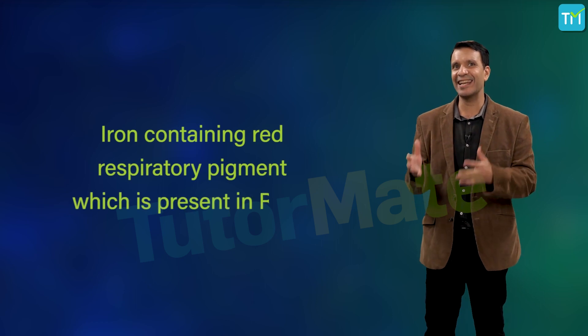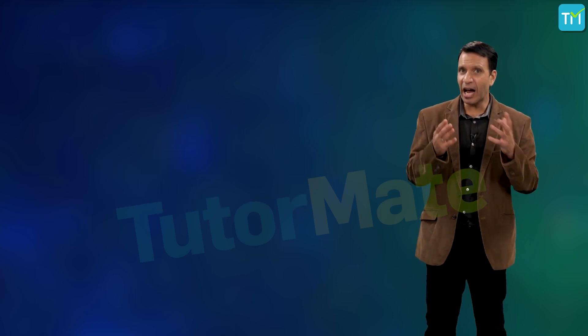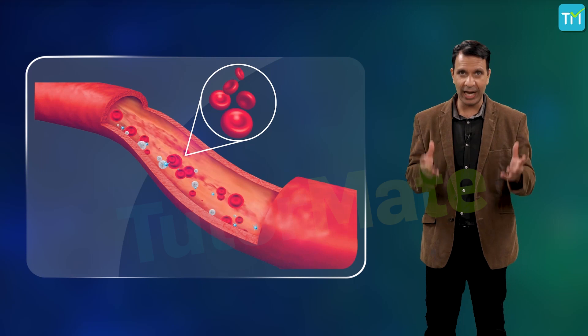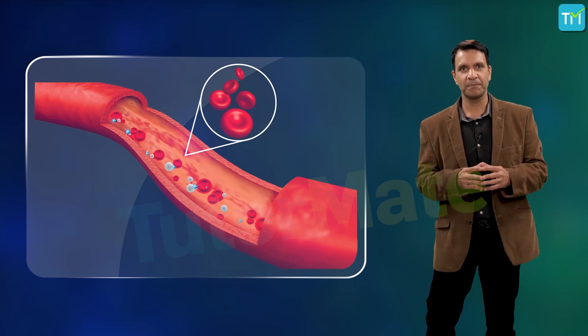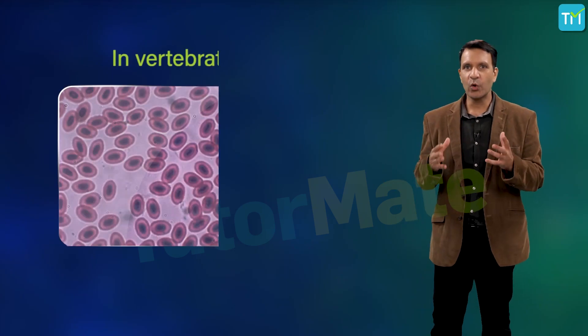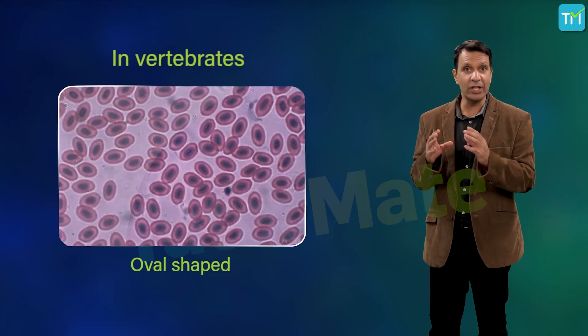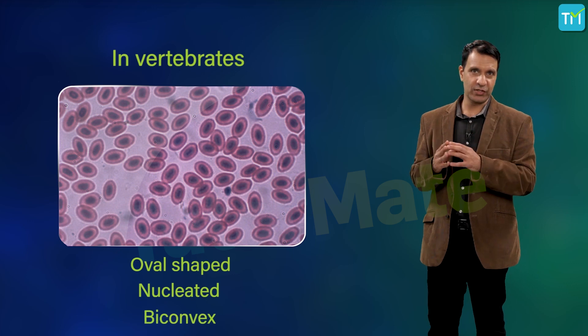Hemoglobin is an iron-containing red respiratory pigment which is present in RBCs. RBCs or erythrocytes play a vital role in oxygen transport in vertebrates. Red blood cells are oval-shaped, nucleated, and biconvex.